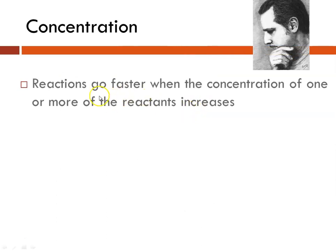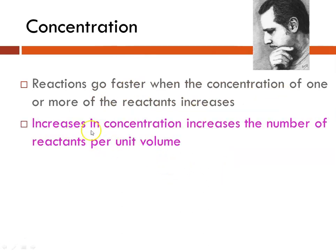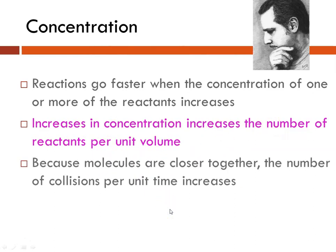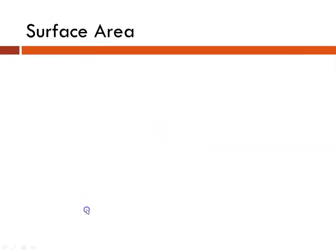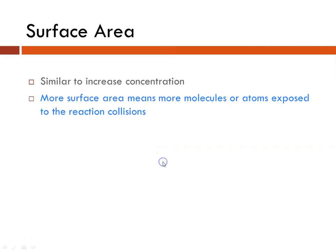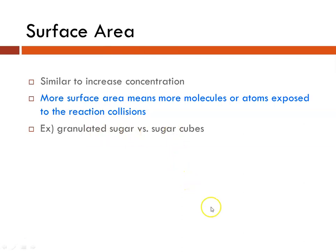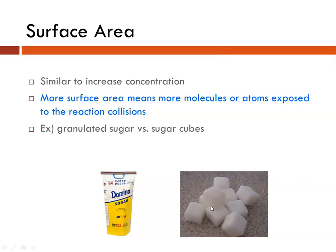Reactions go faster when the concentration of one or more reactants increases because more reactants per unit volume means more molecules closer together, increasing collisions per unit time. Similarly, increasing surface area exposes more molecules or atoms, leading to more reaction collisions. For example, granulated sugar dissolves faster than a sugar cube in iced tea because there is more surface area and therefore more collisions.